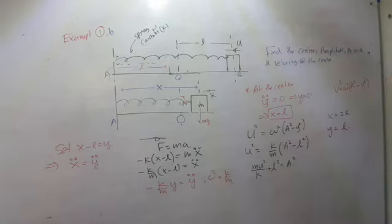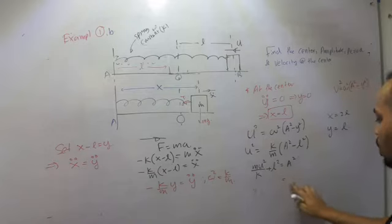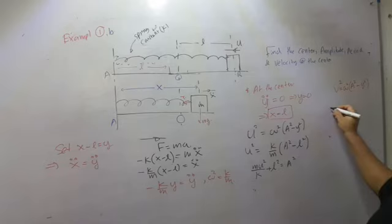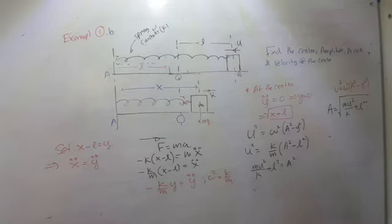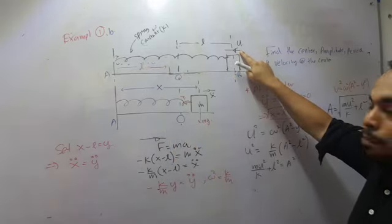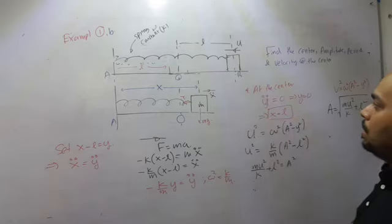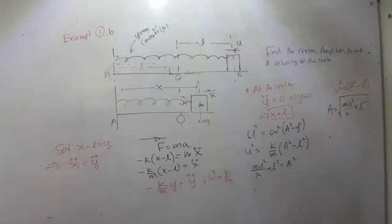Rearranging: A² = mu²/K + L². Taking the square root, the amplitude is A = √(mu²/K + L²). Note that L alone is not the amplitude, because the particle is given a velocity u at point B, so the amplitude is further away from B towards the right. If u = 0, then the amplitude reduces to L, which makes sense — the particle would just be released from rest at that point.